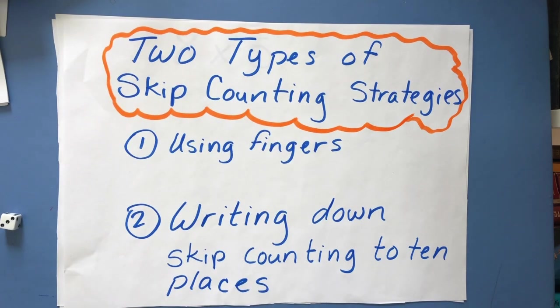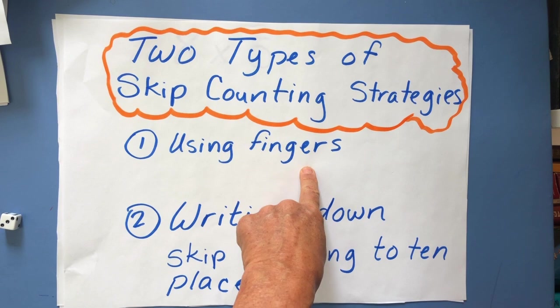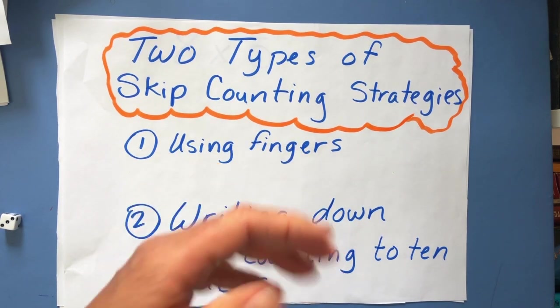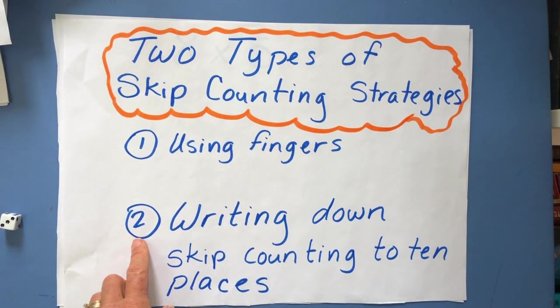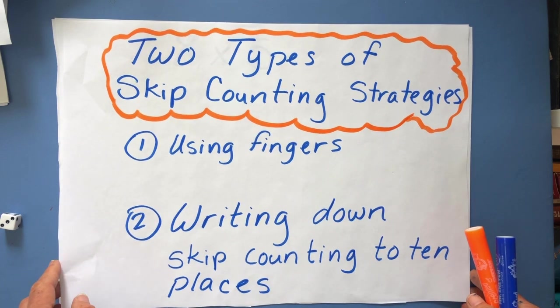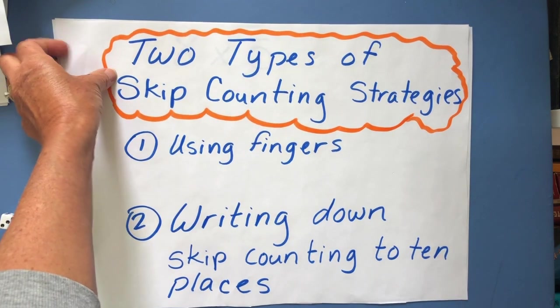Now, I'm going to show you two types of skip counting strategies. One, you're just going to use your fingers to skip count, and you might have a song that you've memorized so you remember the order. Or you're going to write down your skip counting to ten places so you can use that visual device in order to solve your problems. So let's do the first problem.